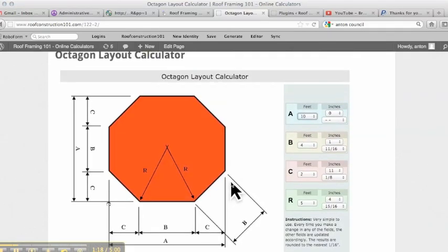So really simple to use. And if you need to lay it out, you would use this and then use octagon rafter layout calculator to build the roof.